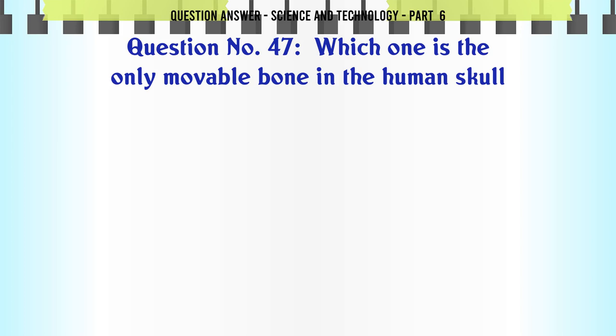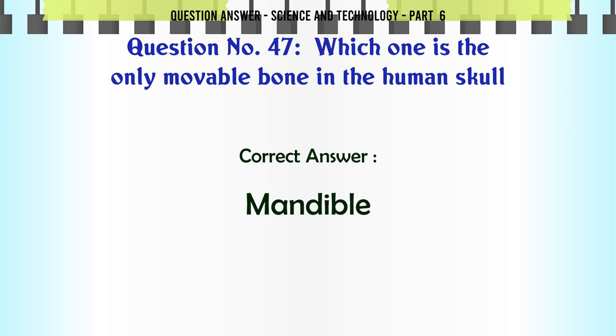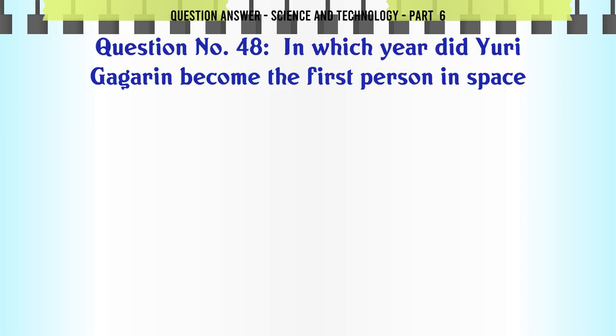Which one is the only movable bone in the human skull? A. Maxilla. B. Vomer. C. Mandible. D. Lacrimal bone. The correct answer is Mandible.